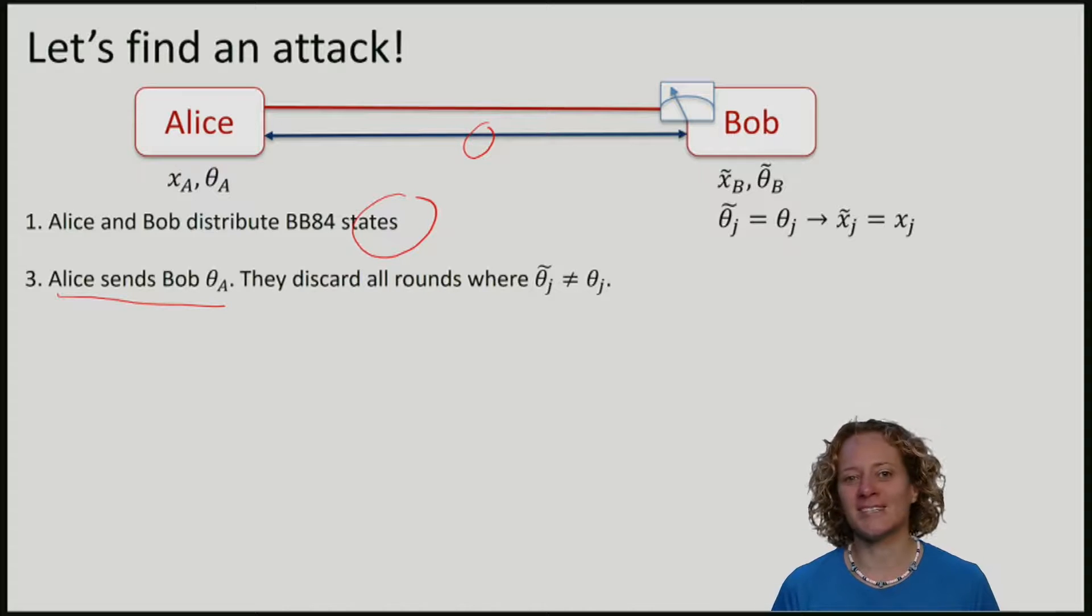Clearly, if Eve knows the entire string, even after all the other processing that we have done, we know that there is not enough min entropy for Eve. The min entropy in fact is zero, and hence we cannot produce any key.